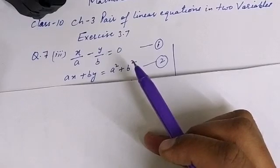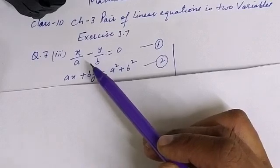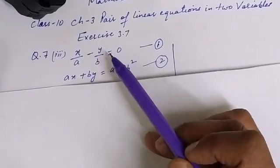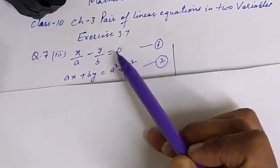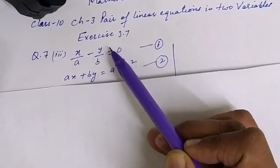In elimination method, what we do is make the coefficient of either x or y in both equations the same. So what we do here, if I multiply equation number 1 by b square.